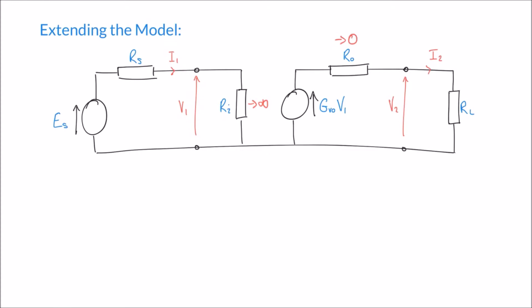In practice, having infinite input resistance and zero output resistance isn't feasible, but these are ideal values that we tend to represent on these diagrams. If these ideal values were the case, adding these extra components into our circuit wouldn't really affect the behaviour of the amplifier. But because these values are only ideal and not the case in practice, the behaviour of the amplifier is affected by these extra components. Firstly, V1 is not the same as ES, the supply voltage — we've supplied some kind of signal as an input, but that input voltage is not the same as V1.